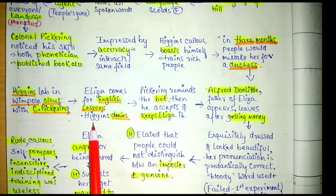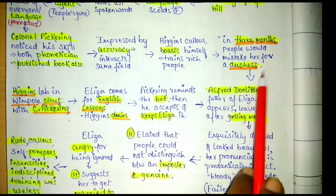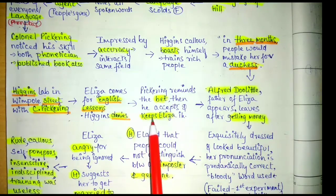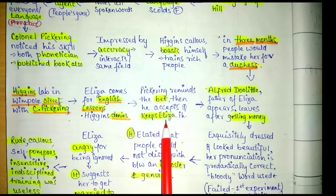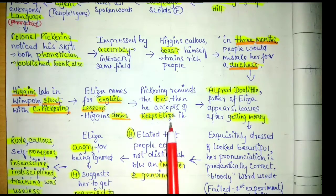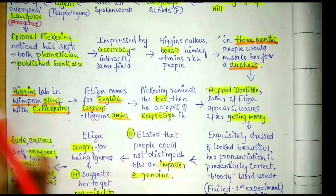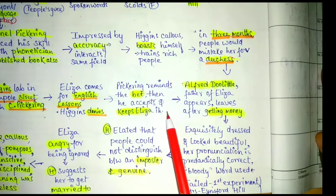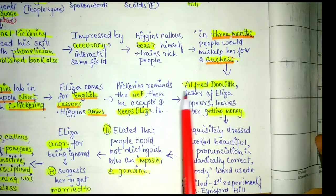Higgins initially denies, saying how can he train somebody who is not known to him and has no money. Then Pickering reminds him of the bet they had discussed the previous night. Higgins accepts the challenge and keeps Eliza in his home. Her training begins — she was first given a shower by a housemaid and everything was arranged for the training.